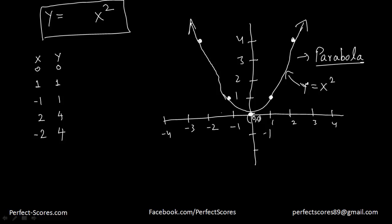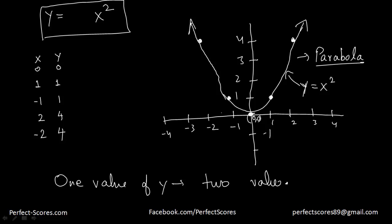As you can observe, two values of x give one value of y — or rather, one value of y is going to have two values of x. This is how every quadratic equation graph looks like. I'm not saying every quadratic equation is going to look exactly like a u-shape — there are going to be some transformations of it — but generally it would be somewhat like this.